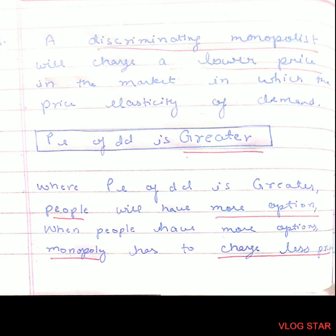Last question. A discriminating monopolist will charge a lower price in the market where the price elasticity of demand is greater. Where price elasticity of demand is greater, people have more options, so the monopolist has to charge a lower price.